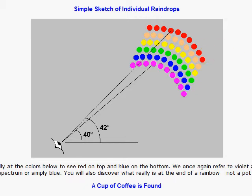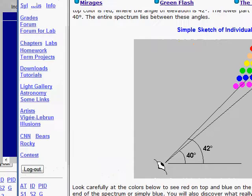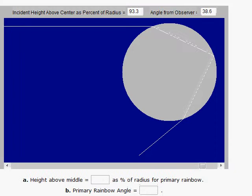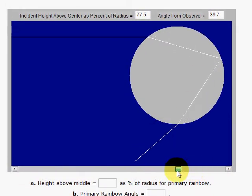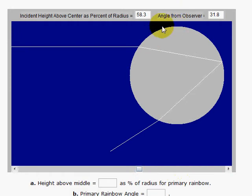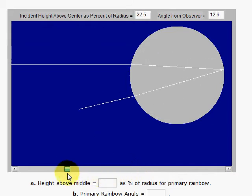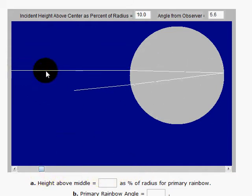Well, where do these angles come from? Why does it work this way? This takes us to this applet where we're going to look at the white light entering the top half of the droplet, because that's where the action is for the primary rainbow. Notice if the light hits close to